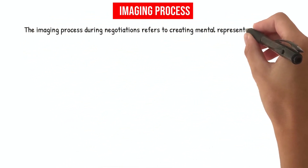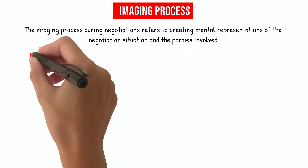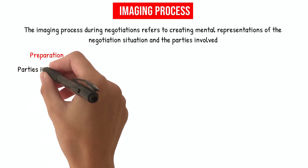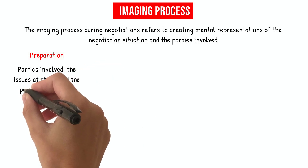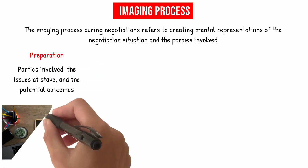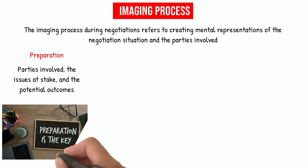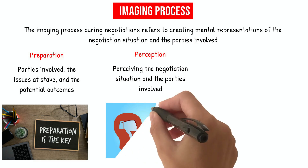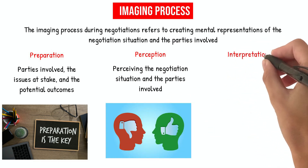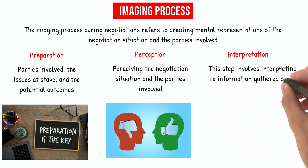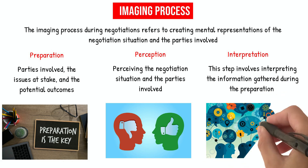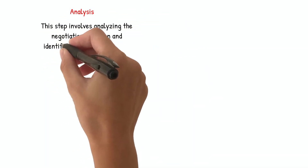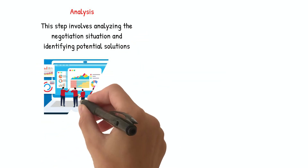Imaging Process. The imaging process during negotiations refers to creating mental representations of the negotiation situation and the parties involved. The steps typically involve the following. Preparation: gathering information about the negotiation situation, such as the parties involved, the issues at stake, and the potential outcomes. Perception: perceiving the negotiation situation and the parties involved, including their interests, goals, and priorities. Interpretation: interpreting the information gathered during the preparation and perception stages and making sense of the negotiation situation. Analysis: analyzing the negotiation situation and identifying potential solutions or strategies that may be effective in achieving a successful outcome.